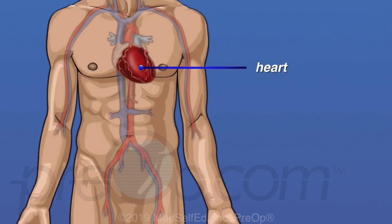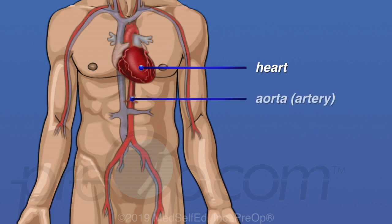Your heart is in the middle of your chest, under your ribs. It is the muscle that pumps blood to the rest of your body. Blood flows through tubes called blood vessels. The aorta is the largest artery in the body and the blood it carries is rich with oxygen.